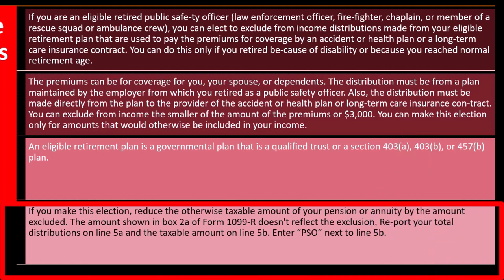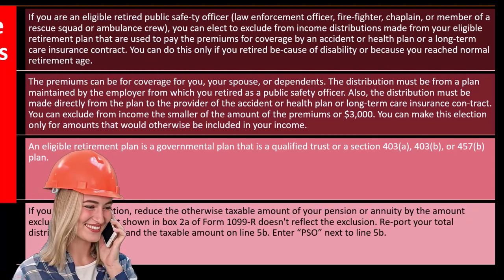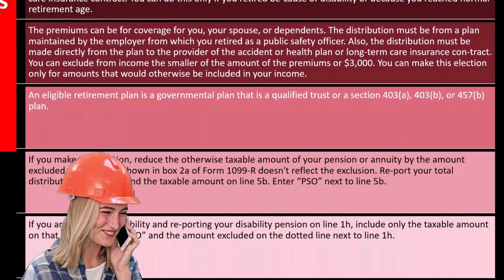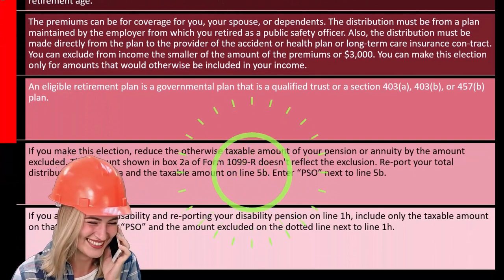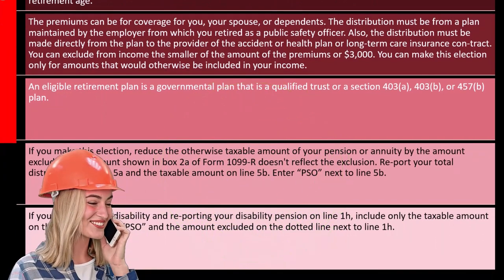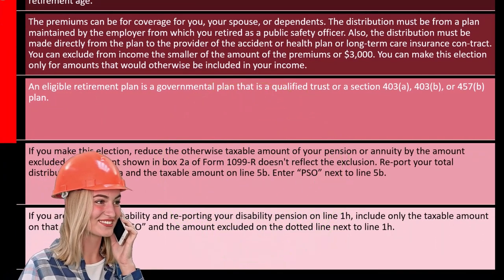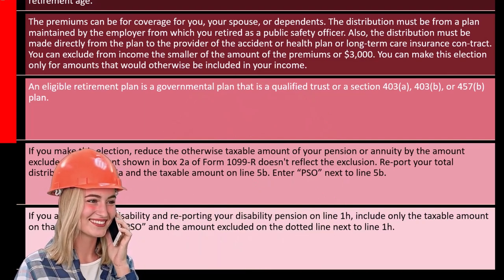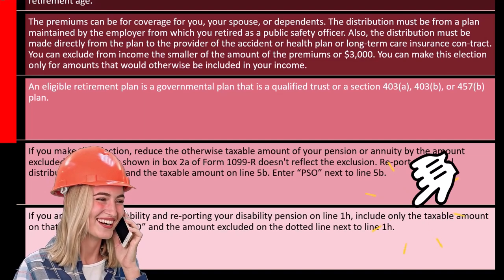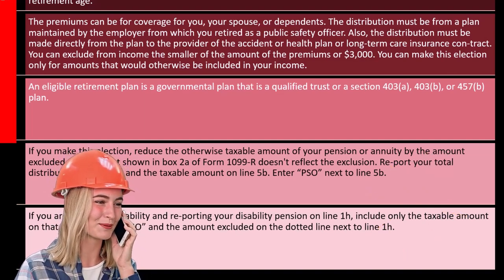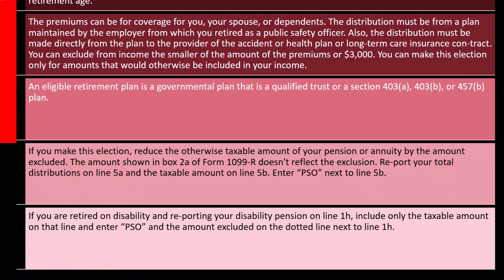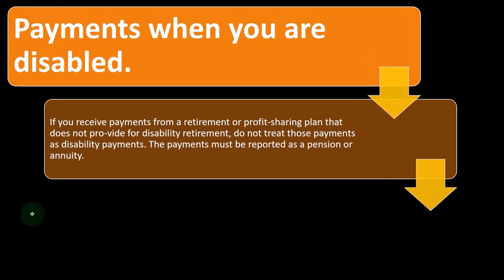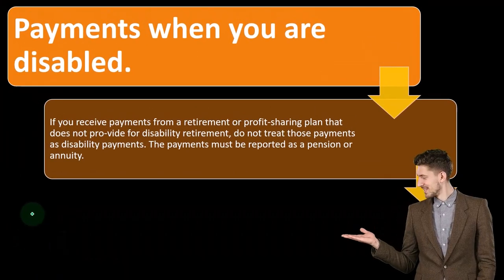Report your total distributions on line 5a and the taxable amount on line 5b. Enter PSO next to line 5b. If you are retired on disability and reporting a disability pension on line 1h, include only the taxable amount on that line and enter PSO and the amount excluded on the dotted line next to line 1h. This is again a somewhat unusual situation.